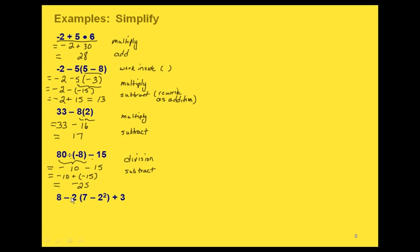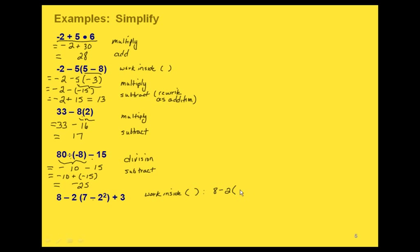This one's a little bit longer. If we look all the way through, we have a subtraction, a multiplication, a set of parentheses with a subtraction inside, an exponent, and an addition. So our first step is to work inside the parentheses. Even inside the parentheses we have to make a choice: we have a subtraction and an exponent, so the exponent comes first. 2 squared is 4.